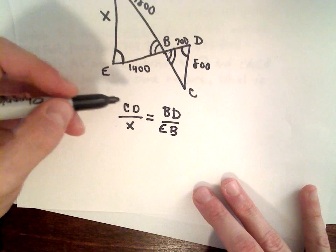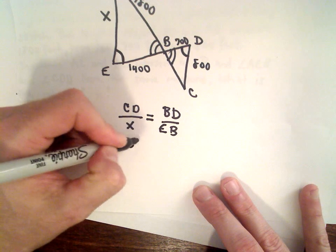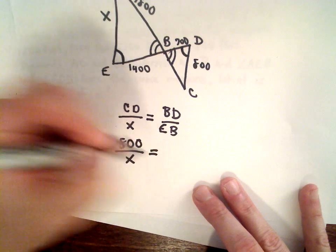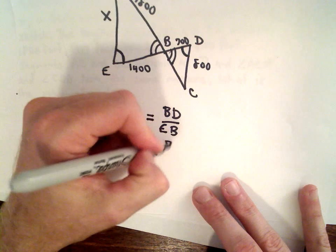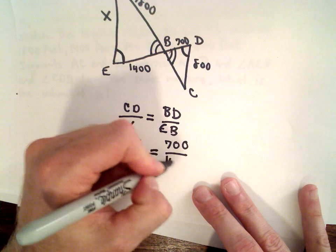And now we can simply fill in those values. So we said CD, that was equal to 800 divided by x. BD has a length of 700, and EB we said a length of 1400.